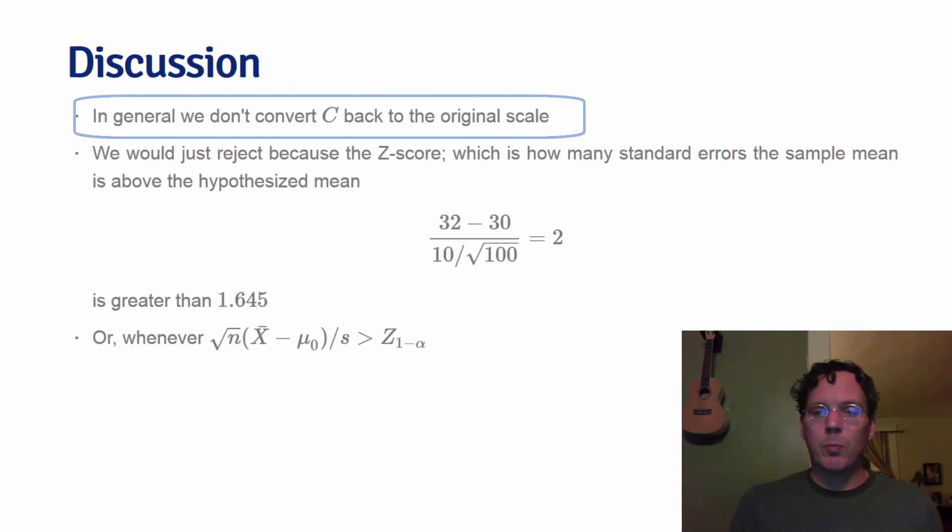In the previous slide, we reverted the calculation of the rejection region, C, back to the original units of the data. However, I hope you got the gist from the problem that basically whenever you were testing greater than, if the sample mean is more than 1.645 standard errors from the hypothesized mean, you would reject. And there was nothing particular about 30 and the standard error of the mean of 1.